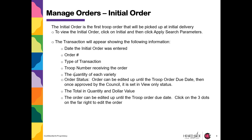The Initial Order is the first troop order that will be picked up at Initial Delivery. From the Manage Orders grid, click Initial and Apply Search Parameters. The transaction will appear showing troop information: the date the order was entered, an order number, the troop number, and the quantity by variety. The order status will be saved in most cases and the order can be edited up until the troop order due date.